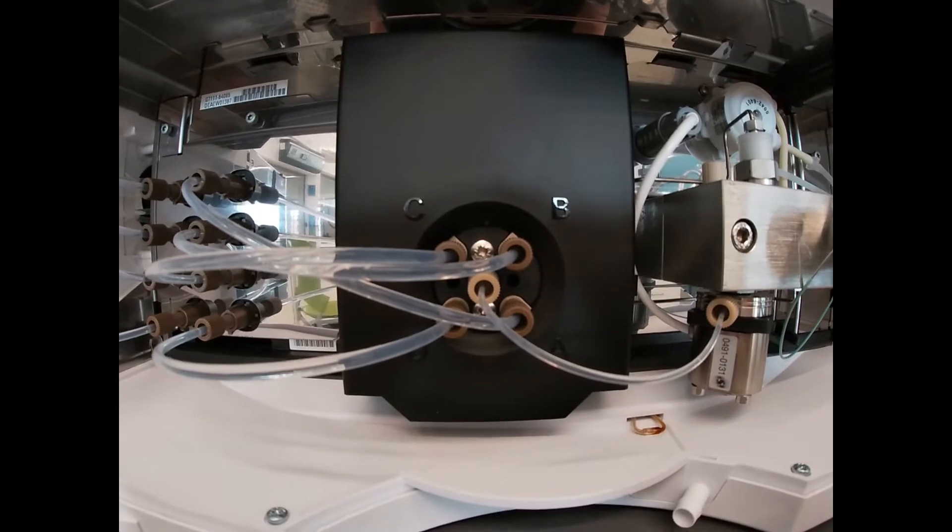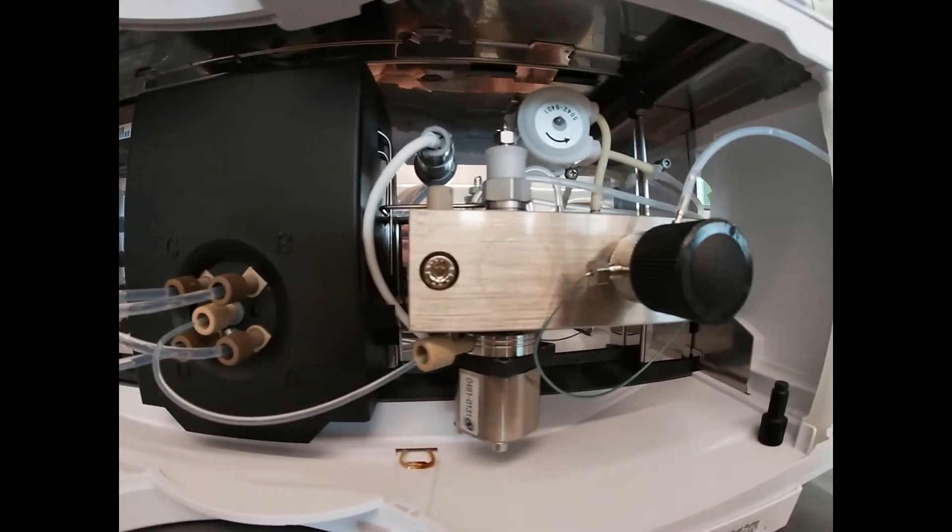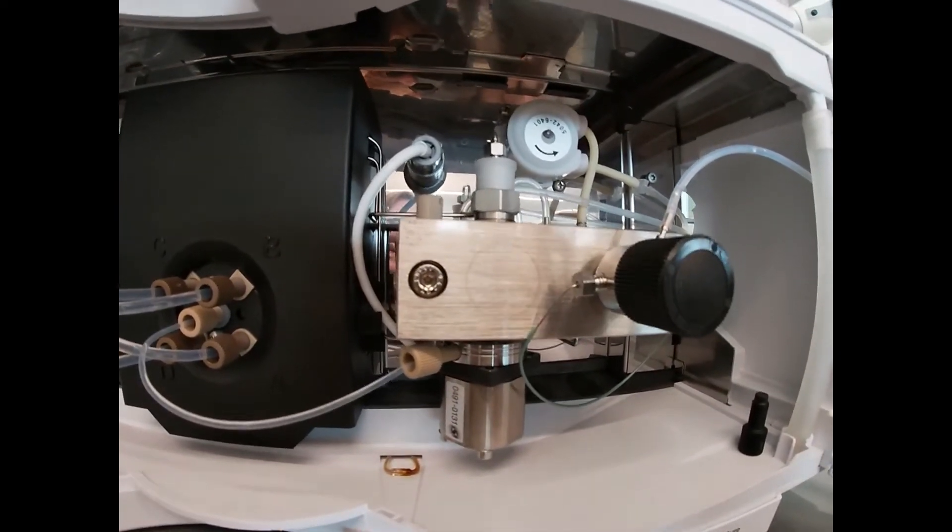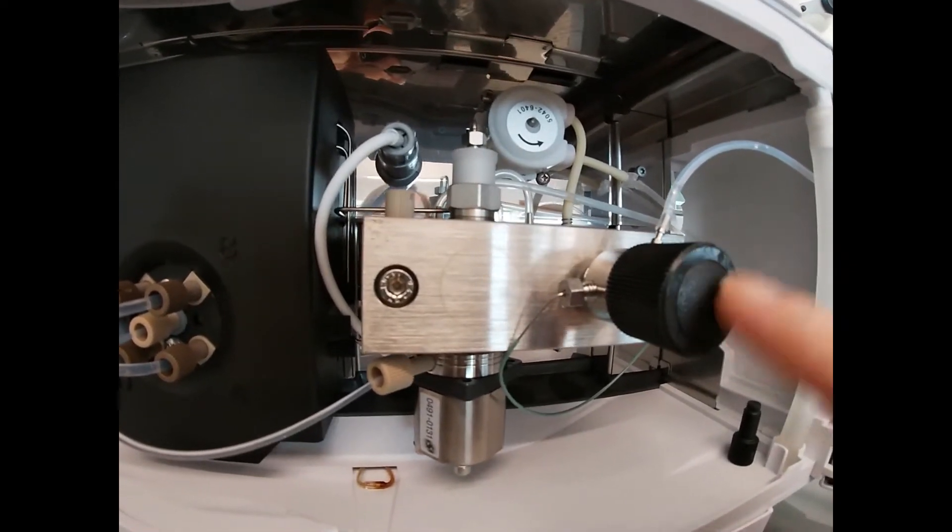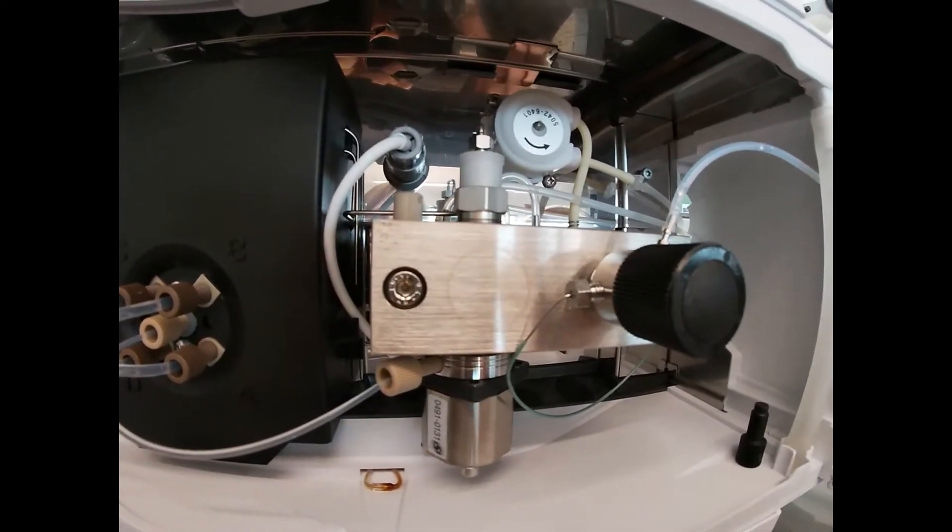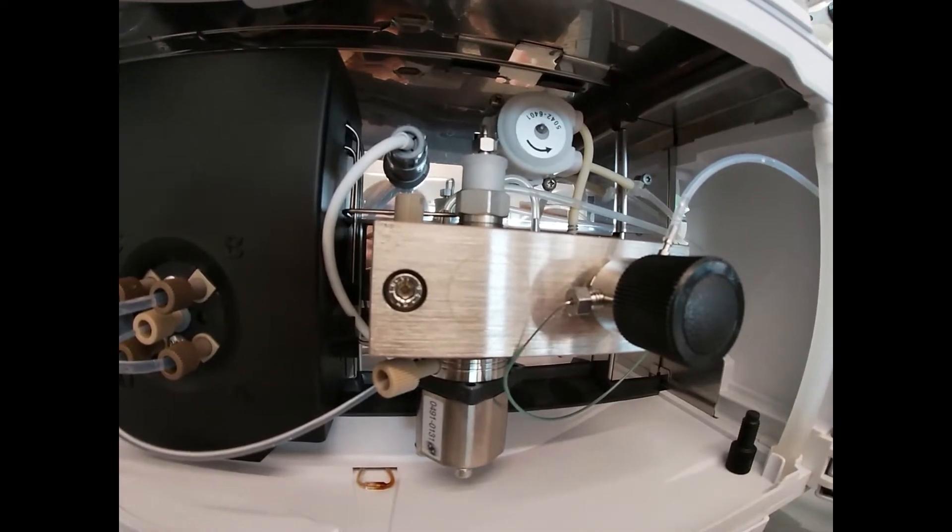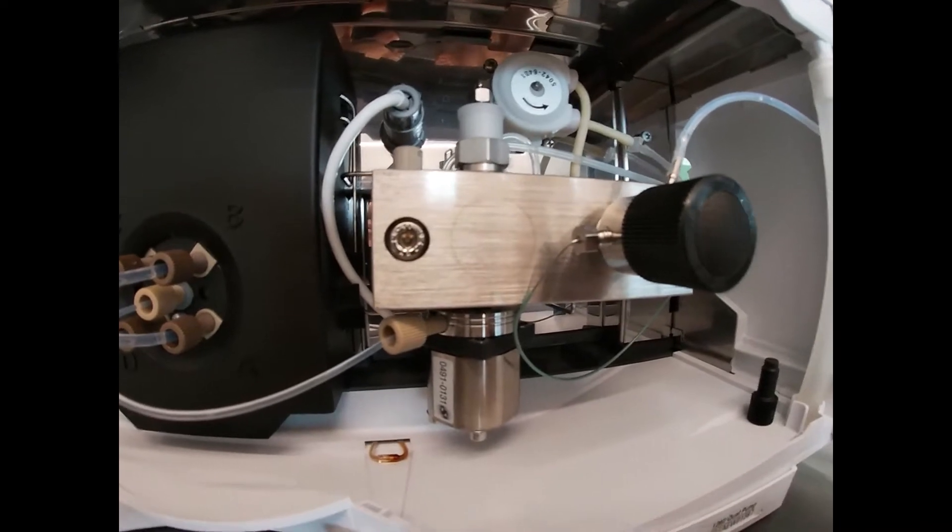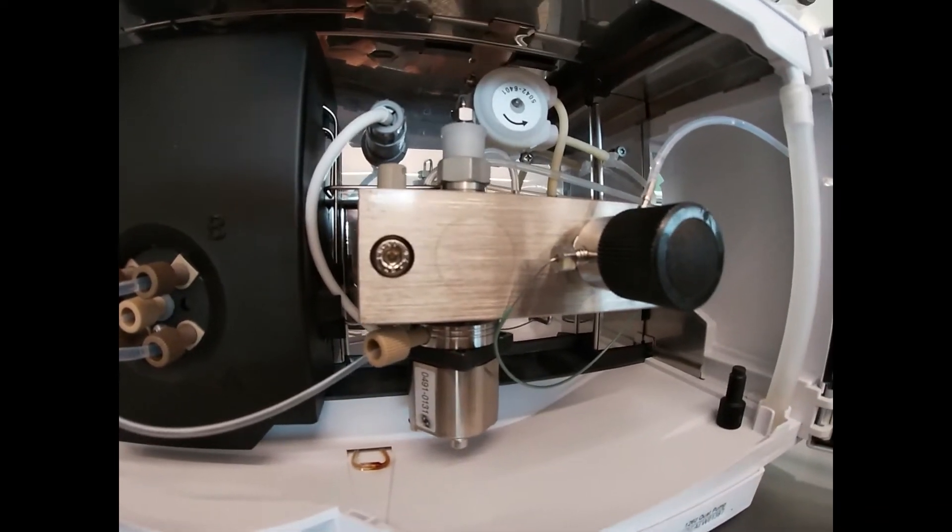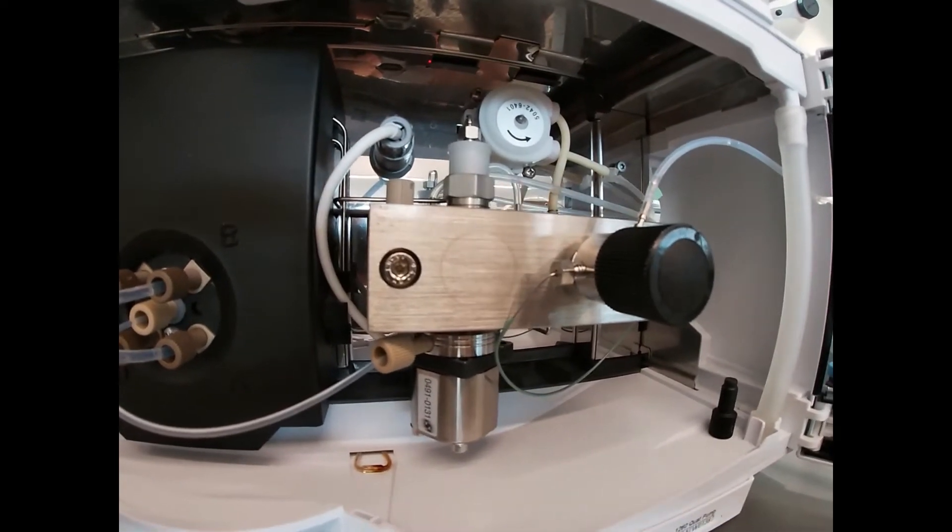We then have a mixing port and a pump assembly. Our pump assembly keeps our solvent passing through the column. Right here we have a purge valve that allows us to clear any air out of the pump as we replace or fill new solvents.